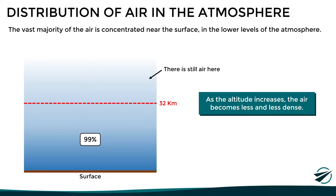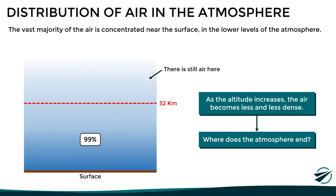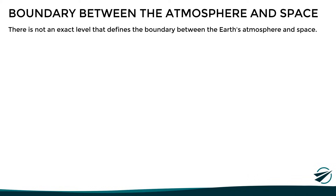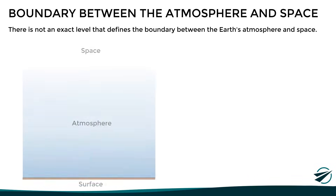At this point, you might be wondering: where does the atmosphere end? Or, in other words, what is the altitude at which we find the boundary between atmosphere and space? Well, actually, there is not an exact level that defines this boundary. This is because as we go up in the atmosphere, the air gradually becomes less and less dense until we eventually reach space.